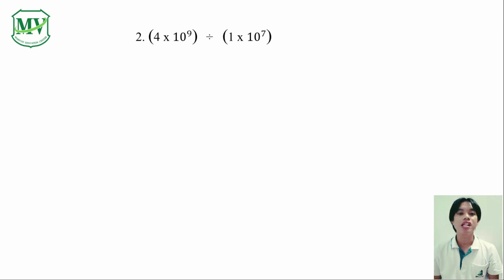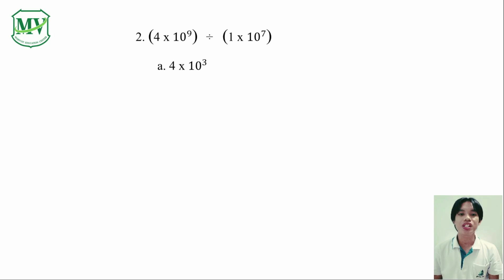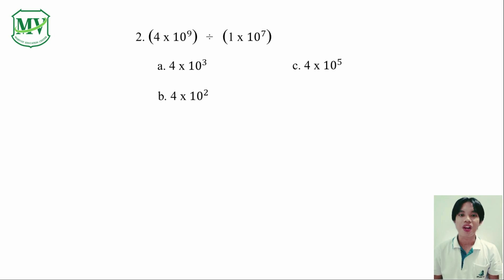Number 2: 4 times 10 raised to the power of 9 divided by 1 times 10 raised to the power of 7. A: 4 times 10 raised to the power of 3. B: 4 times 10 raised to the power of 2. C: 4 times 10 raised to the power of 5. And D: 4 times 10 raised to the power of 6.